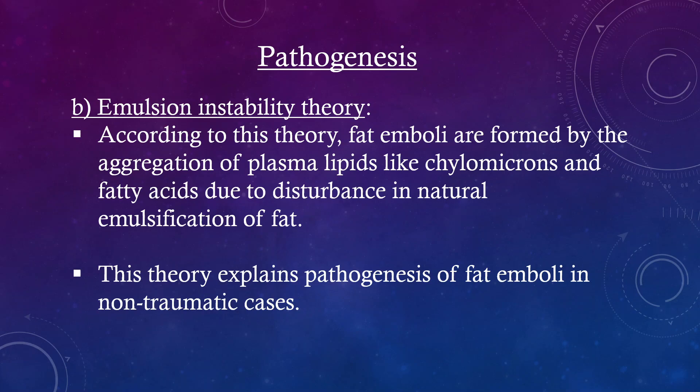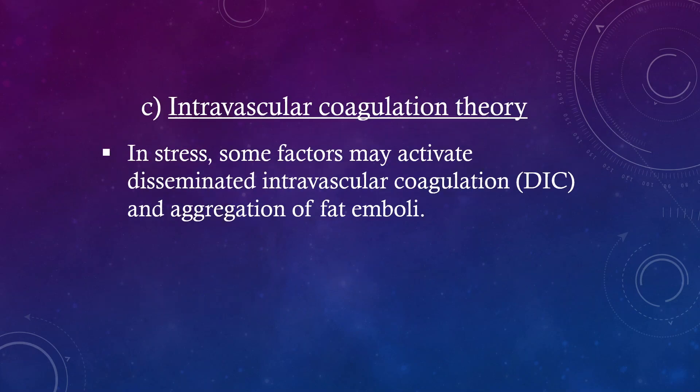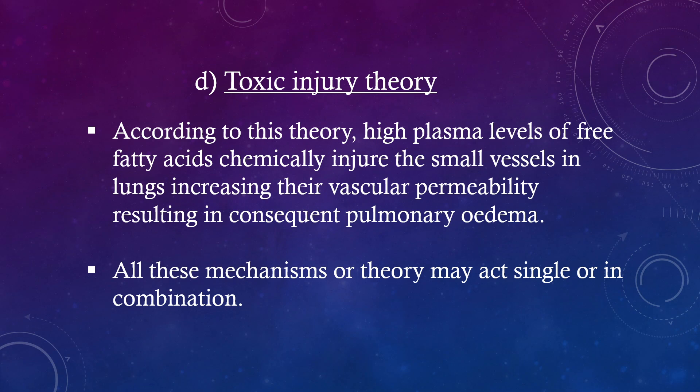The Emulsion Instability Theory explains the pathogenesis of fat emboli in non-traumatic cases. Intravascular Coagulation Theory: In stress, some factors may activate disseminated intravascular coagulation and aggregation of fat emboli. Toxic Injury Theory: High plasma levels of free fatty acids chemically injure the small vessels in the lungs, increasing their vascular permeability, resulting in consequent pulmonary edema. All these mechanisms or theories may act singly or in combination.